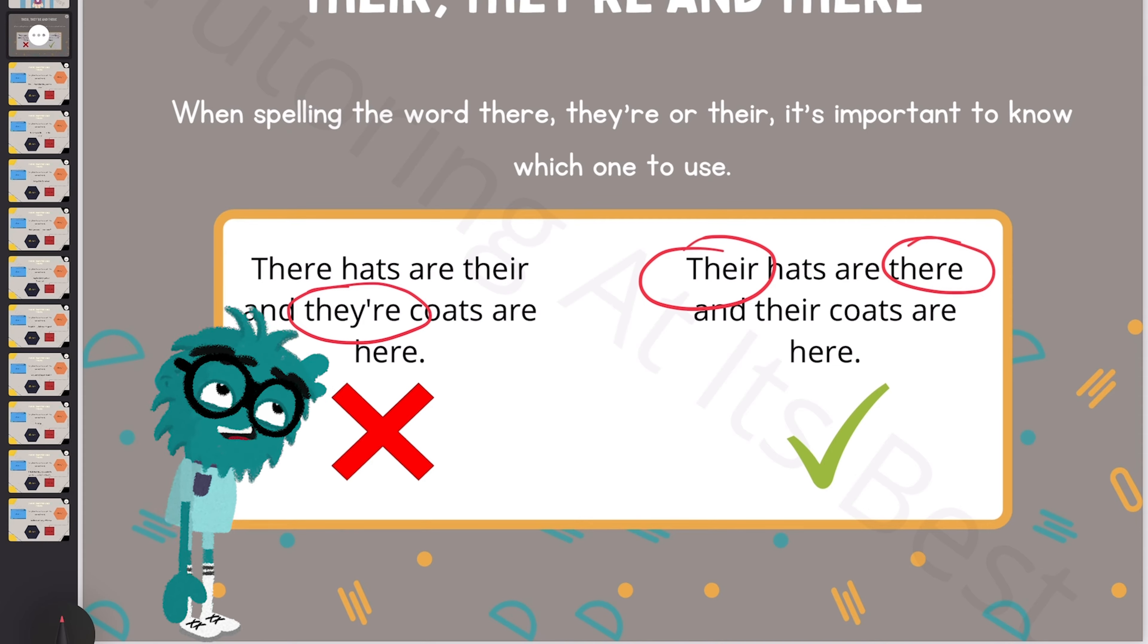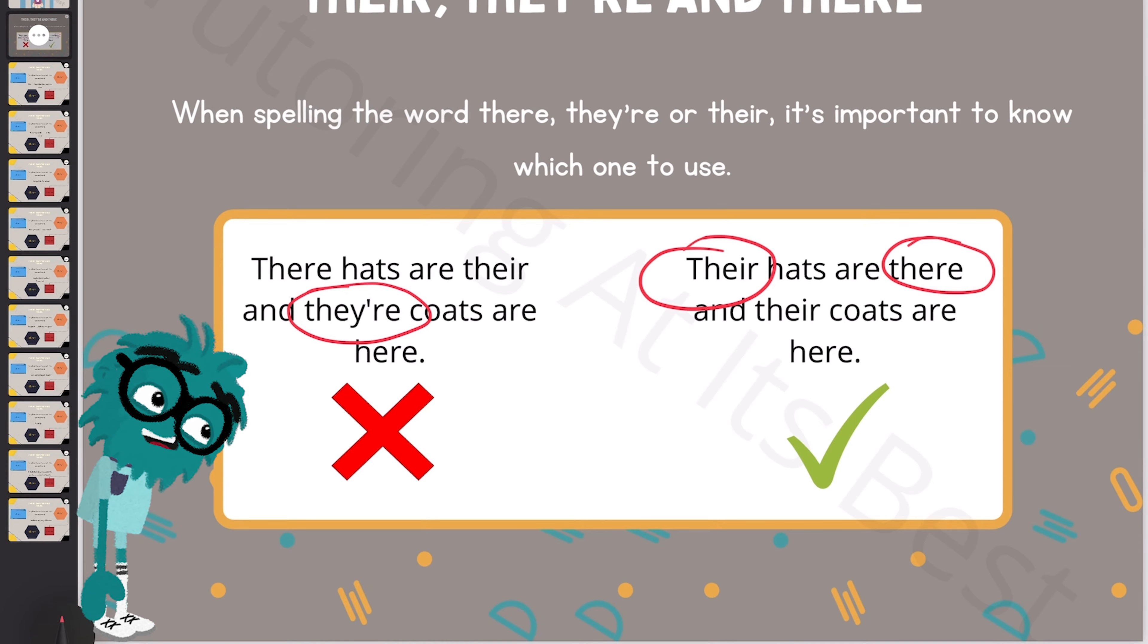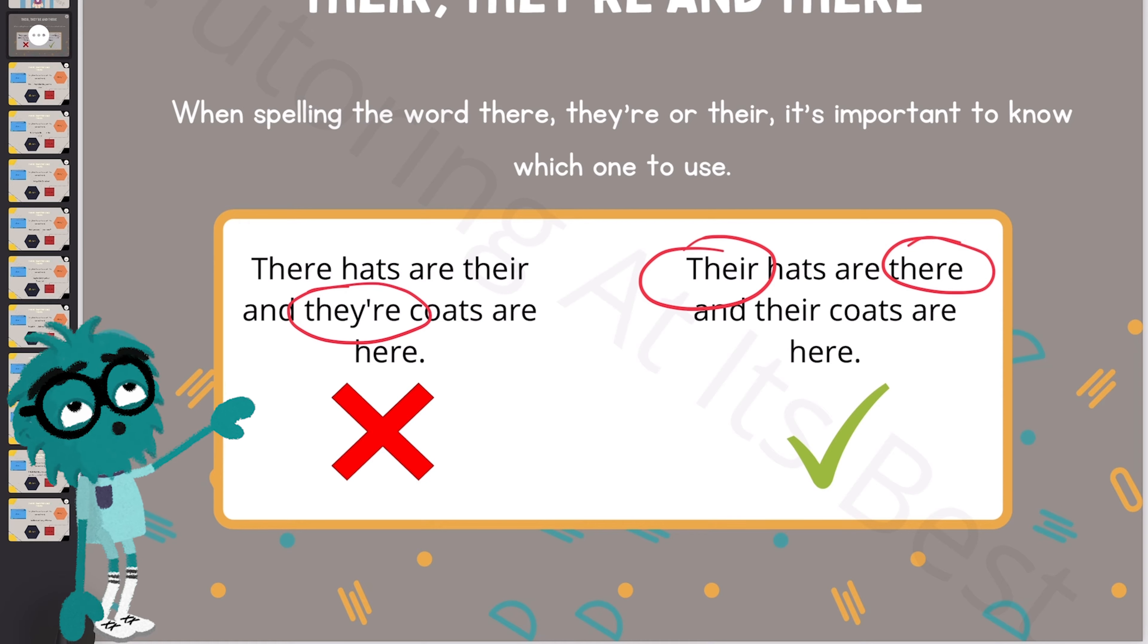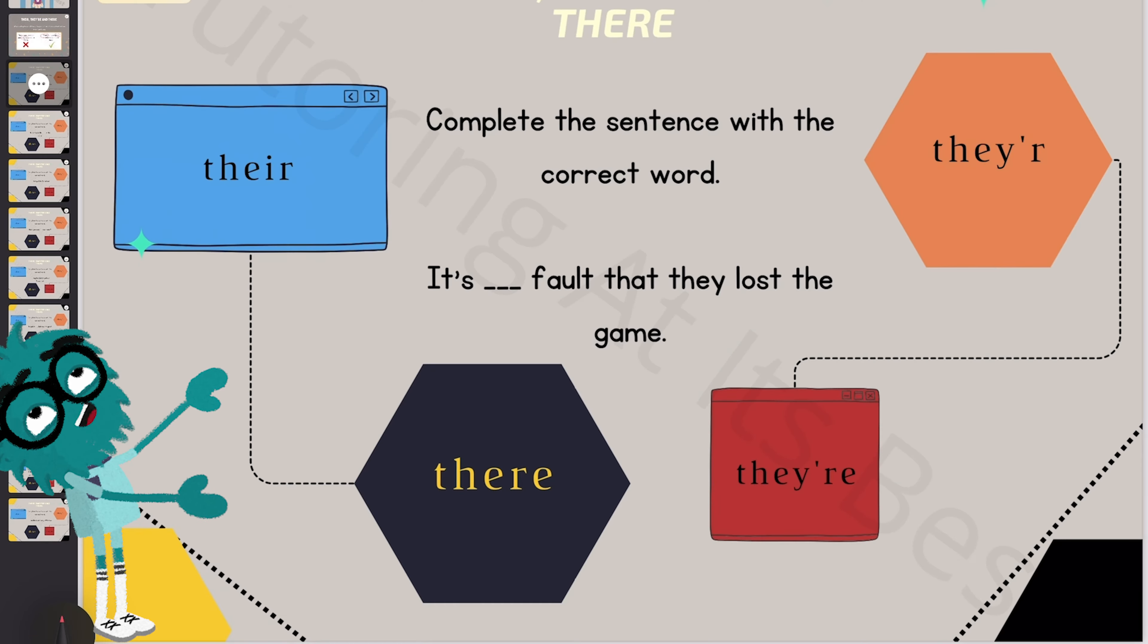We can all be excused for not knowing the meaning or spelling of an unusual word, but it's a sign of poor English if you don't know the basic words. So let's dive into some examples here. I've got 10 questions that I'm going to dive into, and let's go through this together.